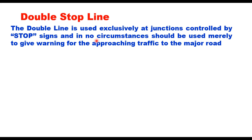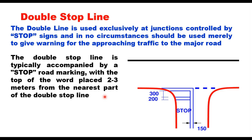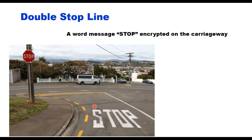A double stop line is a hard message to the driver that they must stop before entering the intersection. It is typically accompanied by a stop road marking with the word placed 2 to 3 meters from the nearest part of the double stop line. The double stop line is two continuous lines each 200 mm wide, spaced 300 mm apart, supplemented by a stop sign on the carriageway — the word 'STOP' is written on the carriageway as the stop sign.